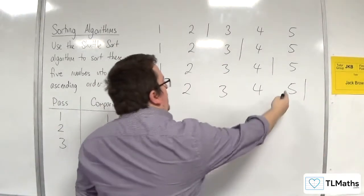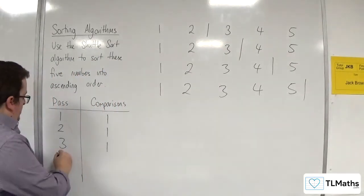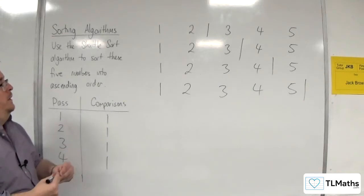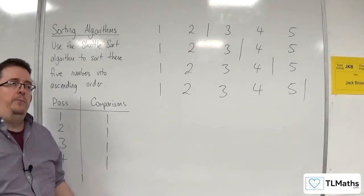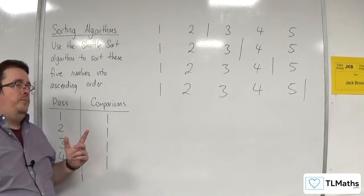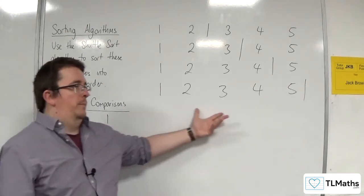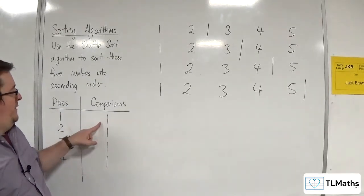We bring in 5. 5 gets compared with 4. 1 comparison, no swaps. So on the fourth pass we make 1 comparison. You can see that the total number of comparisons for a list with 5 numbers that are already in ascending order is actually 4.